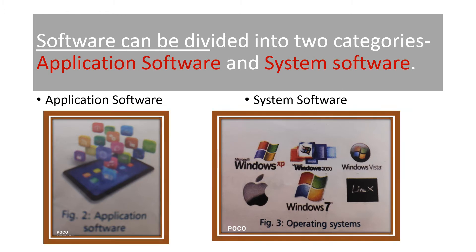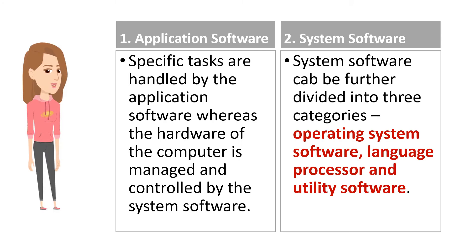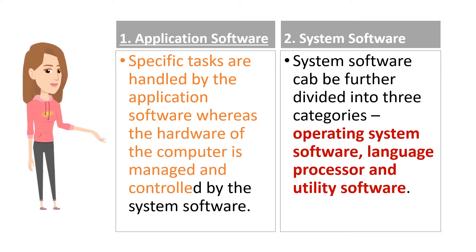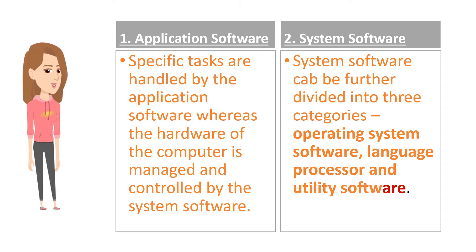Software can be divided into two categories: application software and system software. Specific tasks are handled by the application software, whereas the hardware of the computer is managed and controlled by the system software. System software can be further divided into three categories: operating system software, language processor, and utility software.